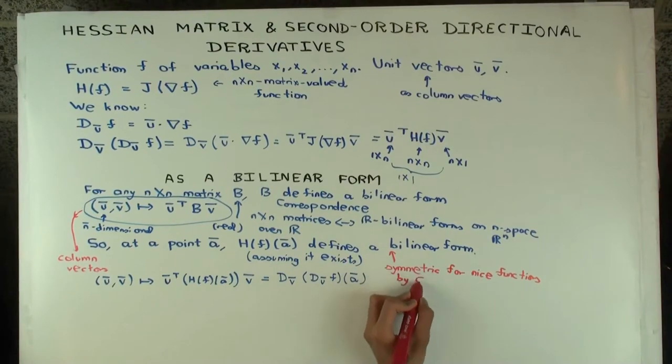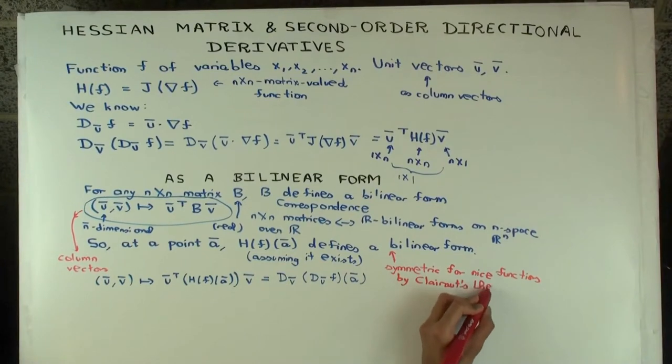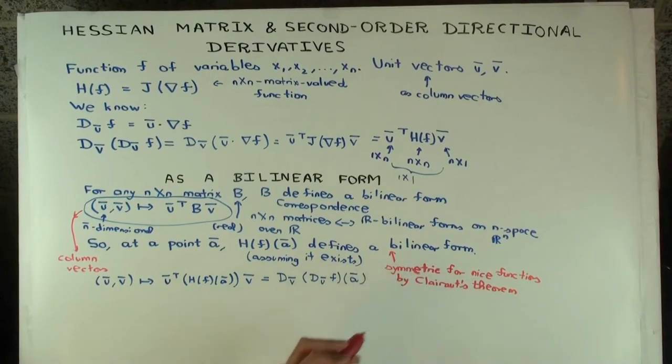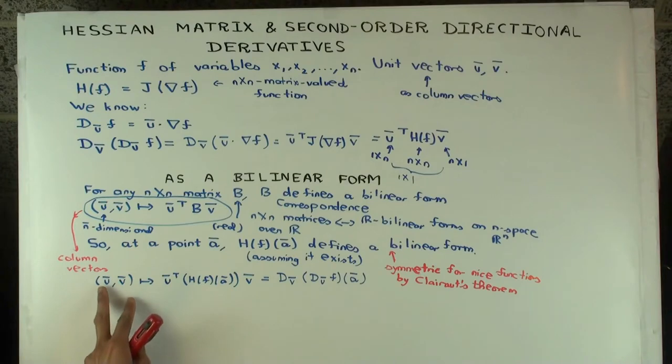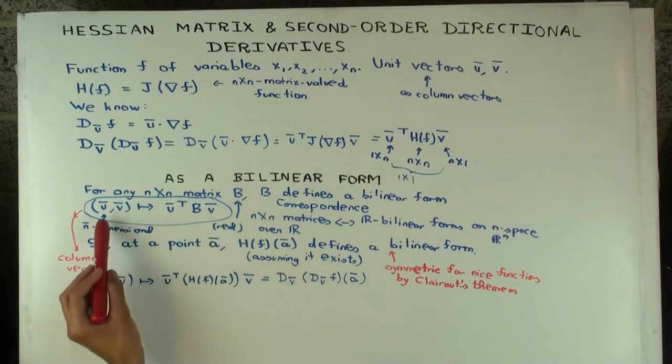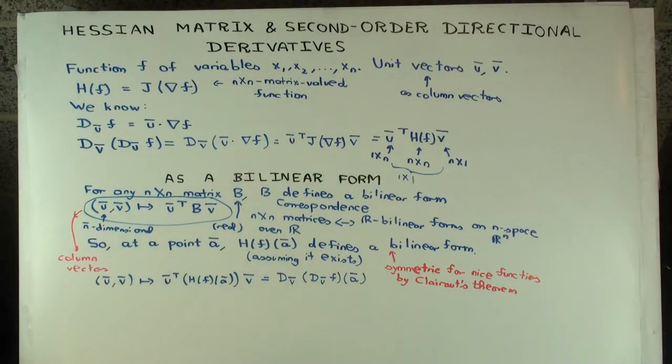And the symmetric nature of the matrix also tells you that the bilinear form it defines is symmetric. What do I mean by symmetric for a bilinear form? Well, it means what you think it should mean. It means that the bilinear form on U and V is the same as the bilinear form on V and U. So if you have a symmetric matrix here for a bilinear form, the form is also symmetric. That means that the form on U and V is the same as the form on V and U. Why is that?